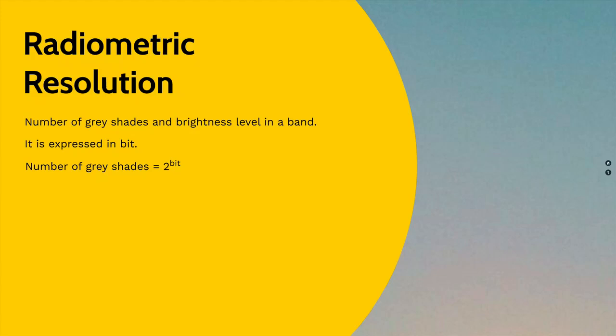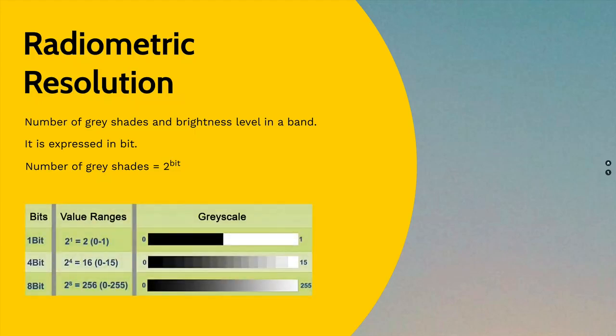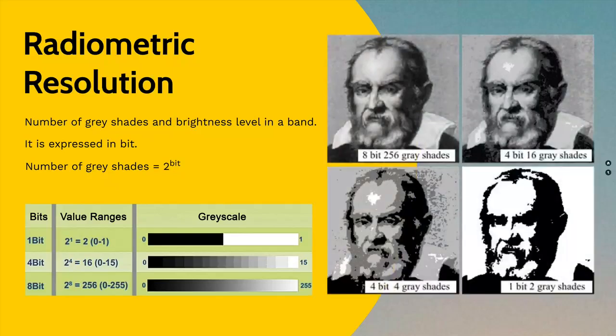The number of gray shades that can be stored in an image can be obtained by calculating 2 to the power of bit. The example portrait here shows how radiometric resolution affects the imagery.